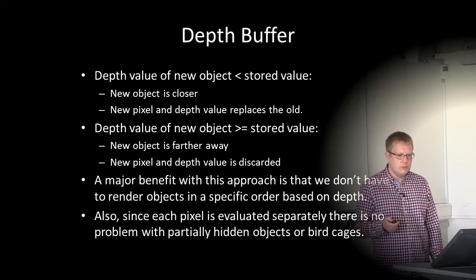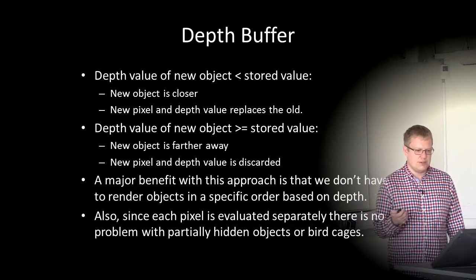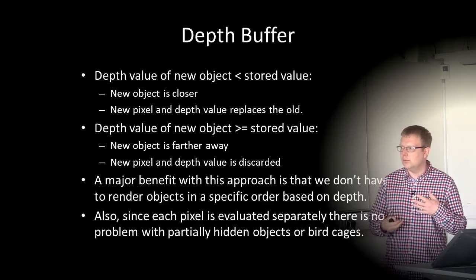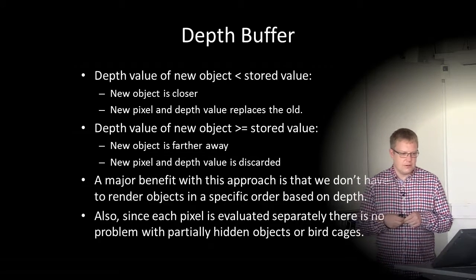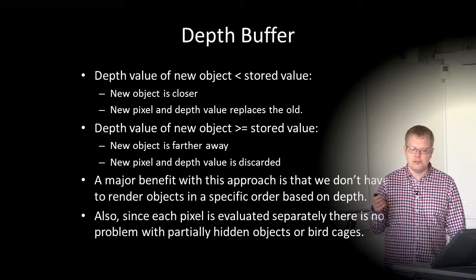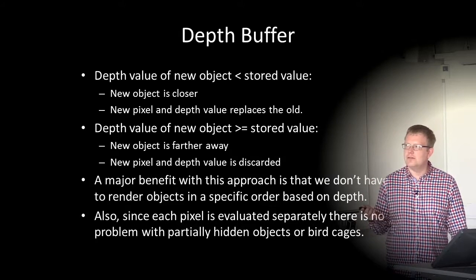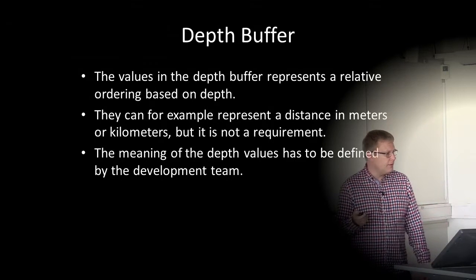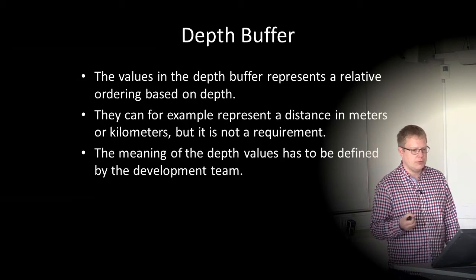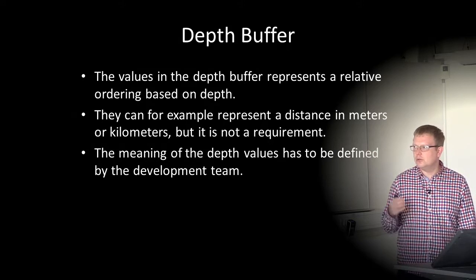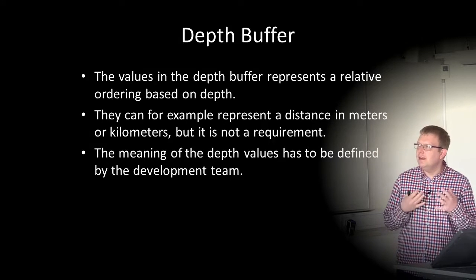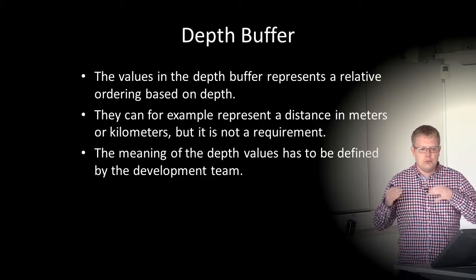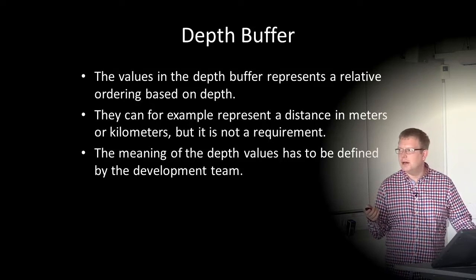A major benefit of this process is we don't have to render objects in a specific order based on depth — we just check the depth values of the current object we are rendering. Since each pixel is evaluated separately, there is no problem with partially hidden objects such as bird cages. The values in the depth buffer represent relative ordering based on depth; they can represent distance in meters or kilometers, but it's not a requirement. The meaning is simply that they define a relative depth, defined by the development team.